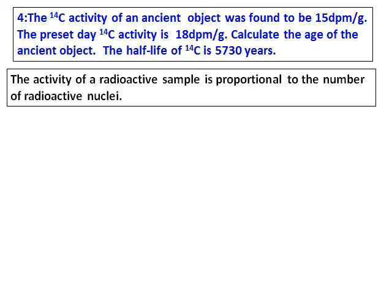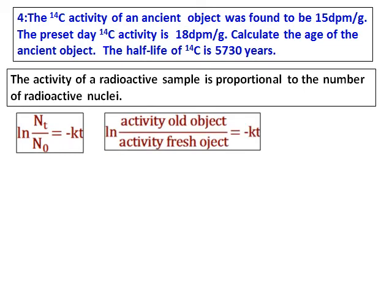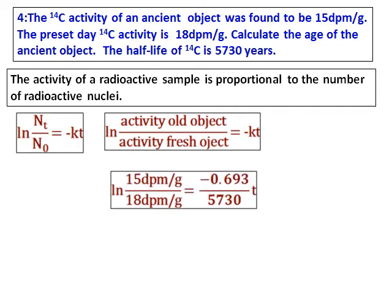We are going to use the same equation, and the activity of a radioactive sample is proportional to the number of radioactive nuclei. Therefore, in that equation Nt over N0, the old object is Nt and the fresh object is N0.